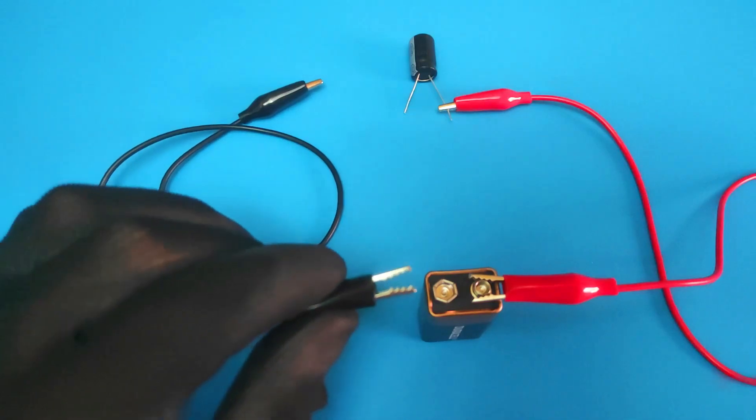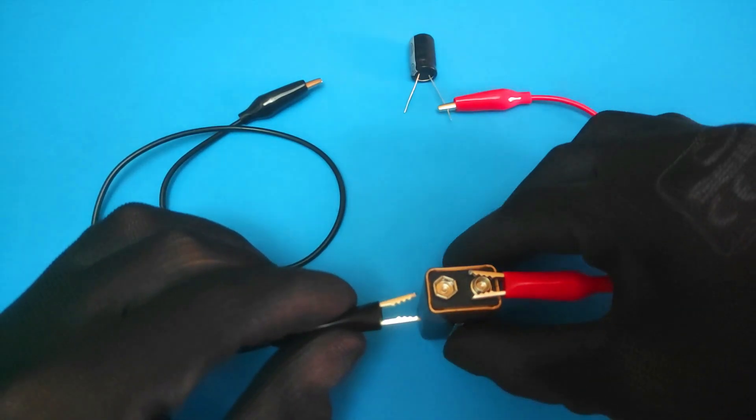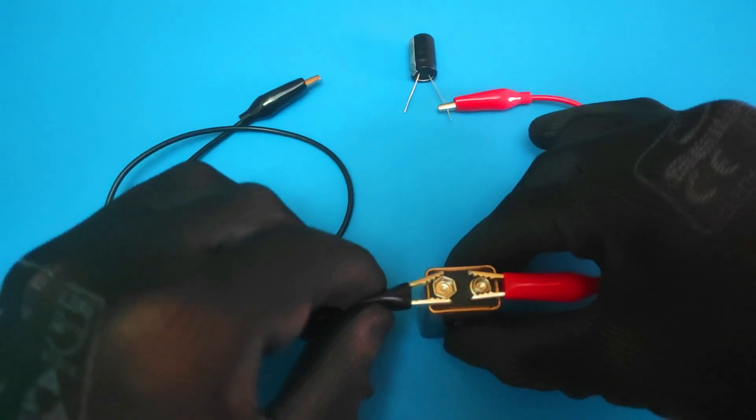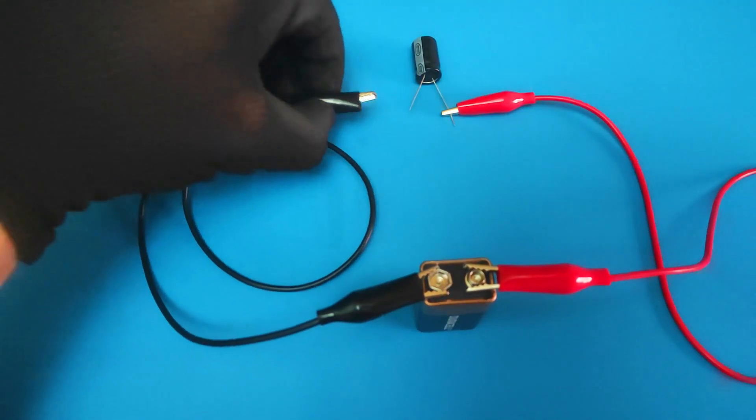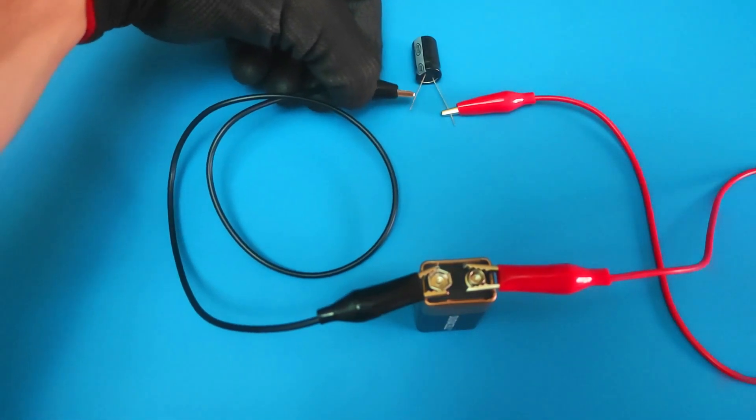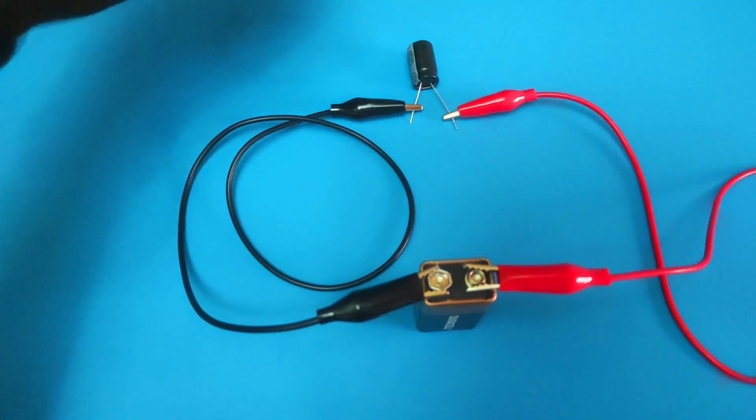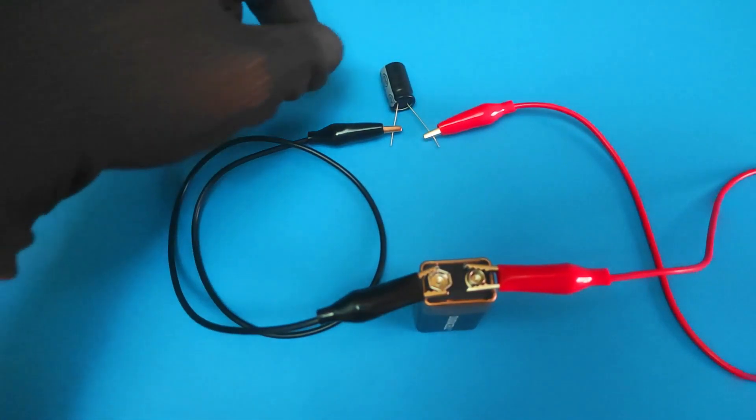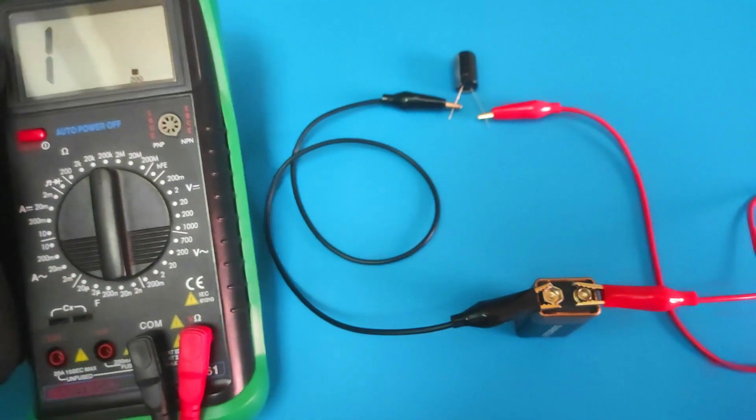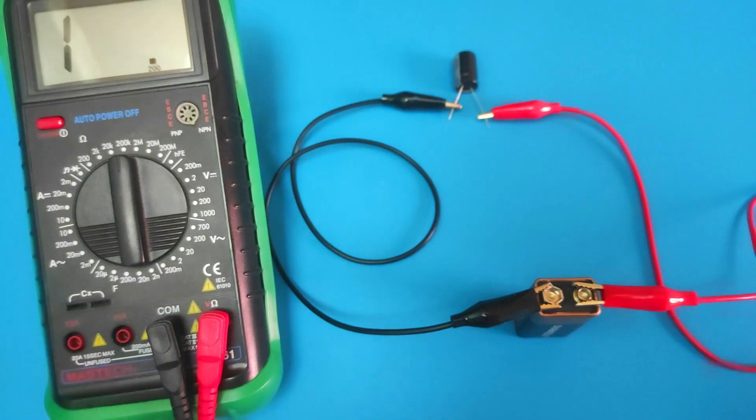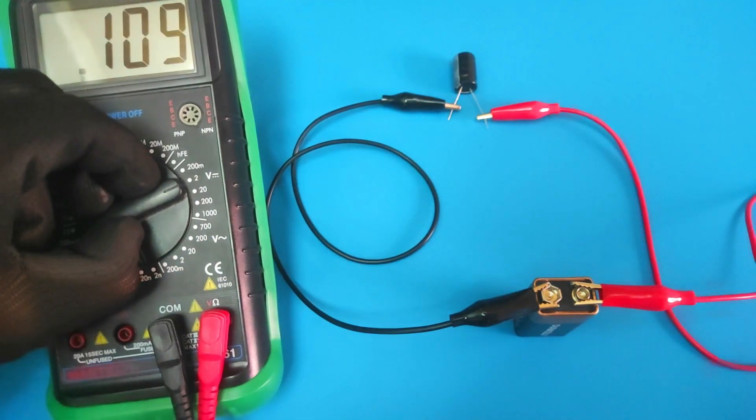And then the negative end of the battery to the negative end of the capacitor. Set the multimeter to a higher reading than the battery. That means you should set it to a higher reading than 9 volts.